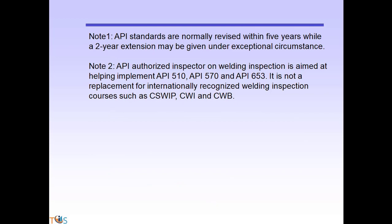API standards are normally revised every five years, while a two-year extension may be given under exceptional circumstances. API authorized inspector welding inspection is aimed at helping implement API 510, 570, and 653. It is not a replacement for internationally recognized welding inspection courses such as CSWIP, CWI, and CWB.